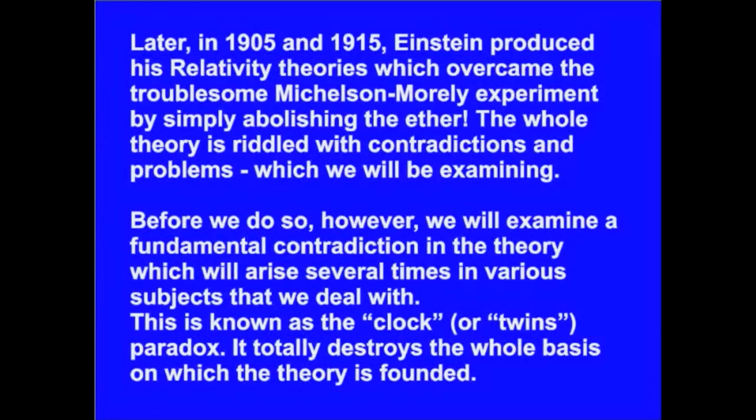The whole theory is riddled with contradictions and problems, which we will examine. Ah, no. It has its limits indicating that it's incomplete, but it works perfectly fine within those limits. I suspect that you simply don't understand it. Before we do so, we will examine a fundamental contradiction in the theory, which will arise several times in various subjects that we deal with. This is known as the clock, or a twin's paradox. It totally destroys the whole basis on which the theory is founded. Nope.